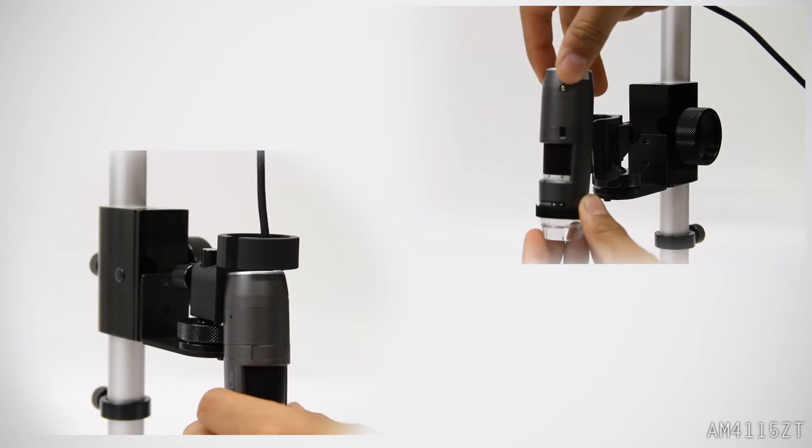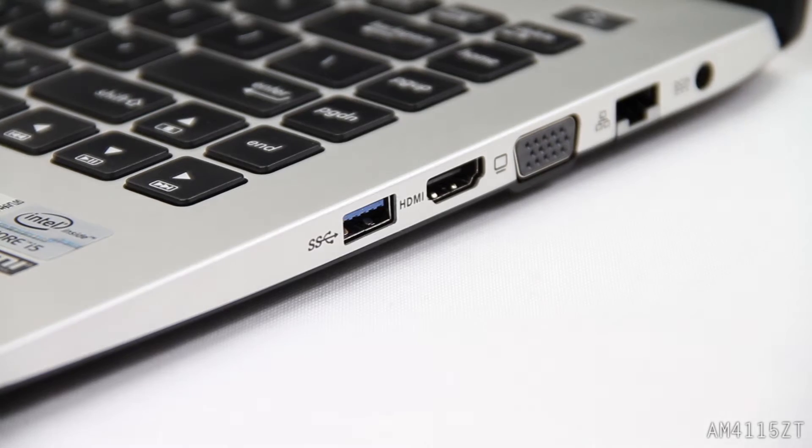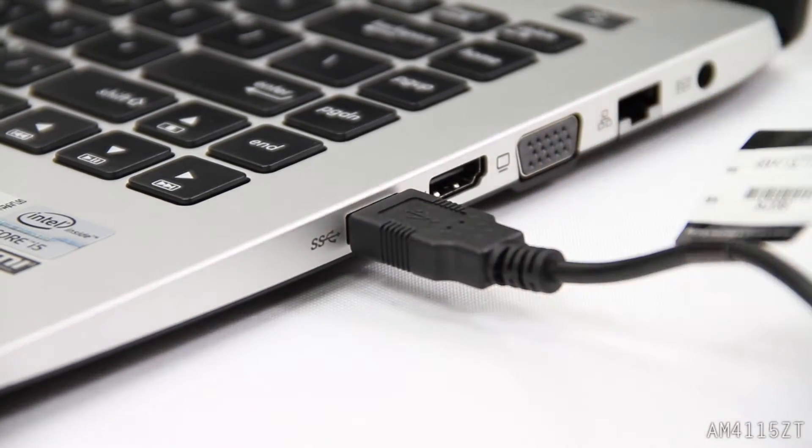To use the AM4-115ZT, place it into the holster. Once you install Dynocatcher 2.0, connect it via USB port.